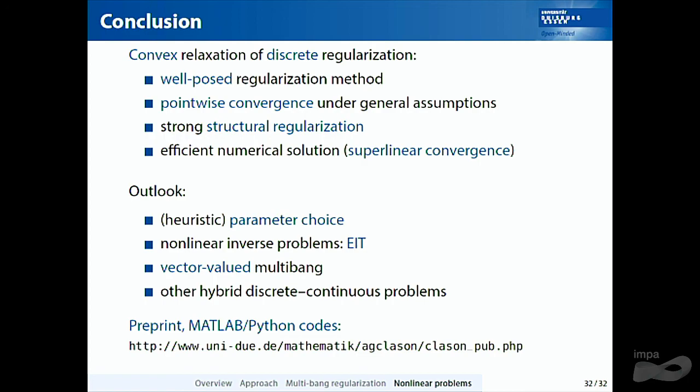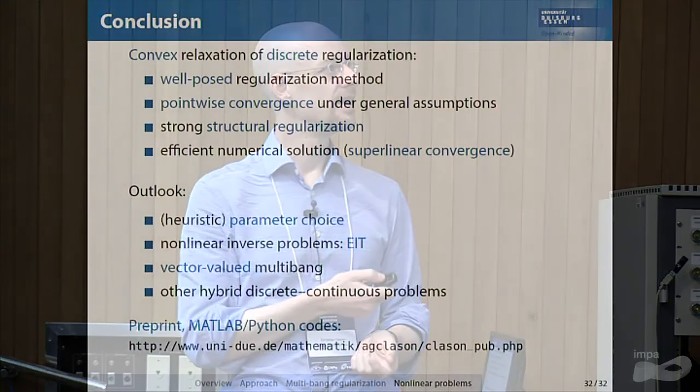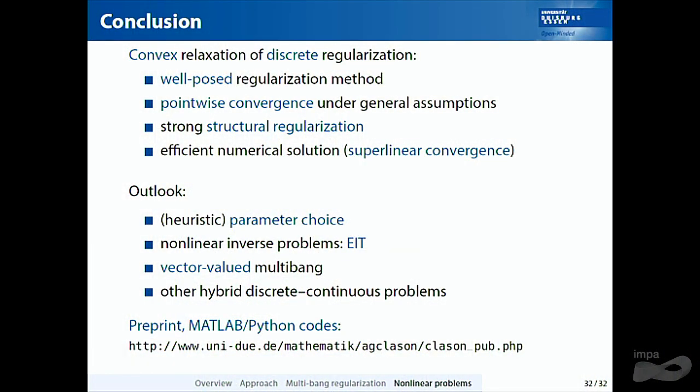I hope I could convince you that this works and is fun to do and could be useful. The Morozov parameter choice rule is too pessimistic — over-smoothing — and I am working on heuristic parameter choice rules. This is a toy example: it is not proper EIT with distributed data, and the next step is to work with actual EIT data, for which Samuli's open EIT dataset will be very useful. The papers and codes are on my webpage. Thank you very much for your attention.